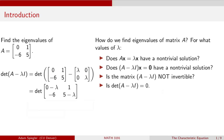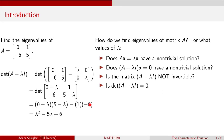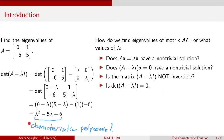Subtracting these two matrices term by term gives a matrix whose first column is (zero minus lambda, negative six) and second column is (one, five minus lambda) — we subtract lambda from the main diagonal entries only. For this two by two matrix, the determinant is the product of the main diagonal entries, (−λ)(5 − λ), minus the product of the off-diagonal entries, (1)(−6). Simplifying gives us the quadratic polynomial lambda squared minus five lambda plus six, which is the characteristic polynomial for this matrix.